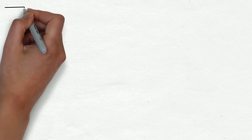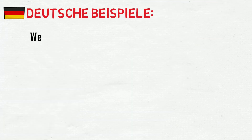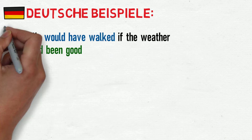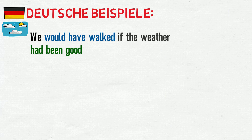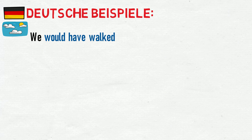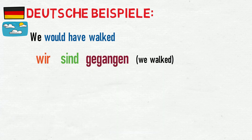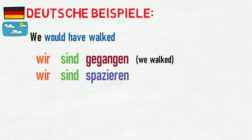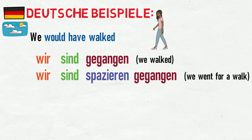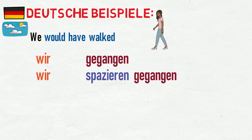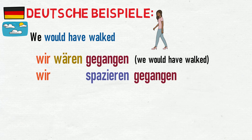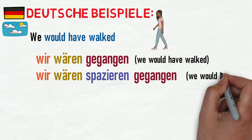Let's finish by translating the other examples. 'We would have walked if the weather had been good.' As this example uses two clauses, let's do the first one first. 'We walked' in the perfect tense uses a form of sein as the helping verb, as there's movement when you walk. To make this conditional perfect, we simply swap sind with its subjunctive form, wären. Wir wären gegangen — we would have walked. Or: wir wären spazieren gegangen — we would have gone for a walk.